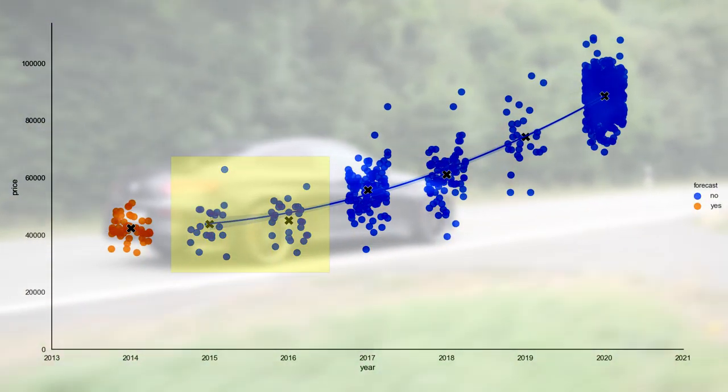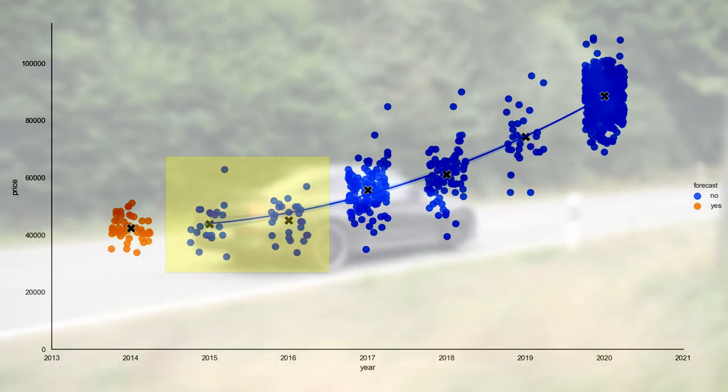So in other words, the forecast model tells us that if you own a 2015 car, you can expect to lose on average $1,377 in the upcoming year. You can see that this price drop is in line with the price decrease between 2016 and 2015 and the overall development of the curve.